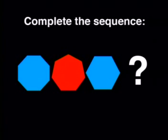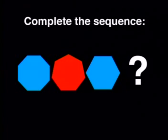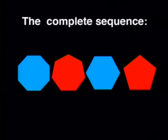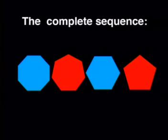Now how about this one? What shape do we need to complete this sequence and what colour should it be? I think it should be a regular pentagon — a five-sided shape with all equal sides — and the colour should be red. The pattern started with an octagon with eight equal sides, then a heptagon with seven, then a hexagon with six, so the next must have five equal sides — a pentagon. And since the colours are blue, red, blue, the pentagon must be red.